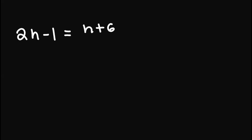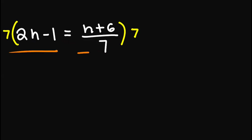Let's have this last example: 2h minus 1 equals h plus 6 over 7. So for this case, we have a denominator — we have a fraction. Despite that, our goal remains the same, and that is to find the value of h. So first, simplify things by removing this denominator. We can multiply 7 on both sides. We multiply both sides because remember that in an equation, what we do on one side, we also do on the other side.